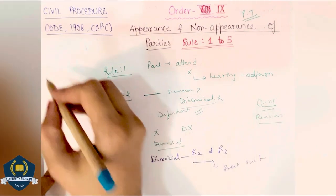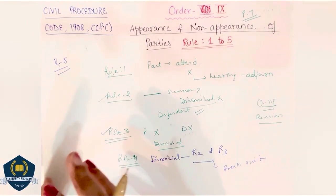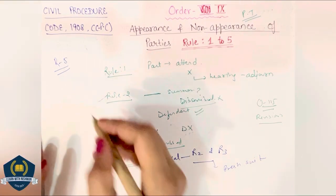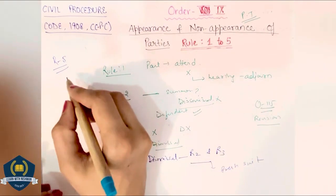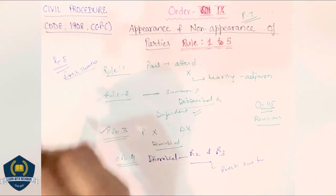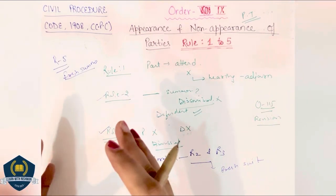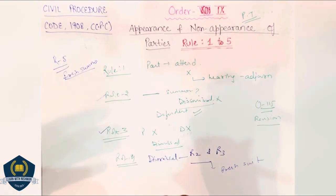Coming to Rule 5 — rule 5 is very very important. Rule 5 क्या बात करता है: where summons is not reached to defendant, defendant के पास समन पहुँचे ही नहीं है within 7 days, so plaintiff must apply for fresh summons। Plaintiff को knowledge होगी कि 7 दिन के अंदर-अंदर defendant के पास समन नहीं पहुँच रहे हैं, तो वो fresh summons के लिए apply करेगा। And if it is not done, plaintiff नहीं करता है, then court can dismiss the suit।